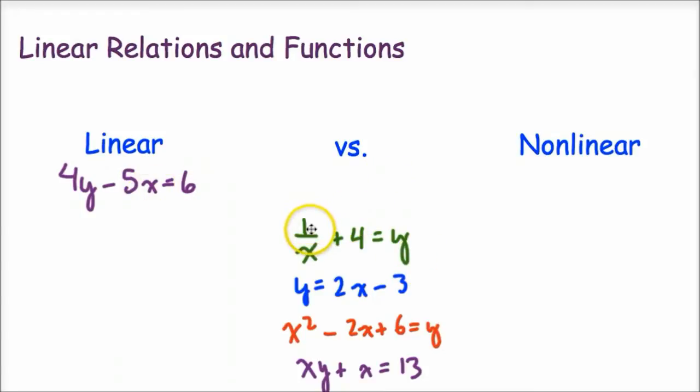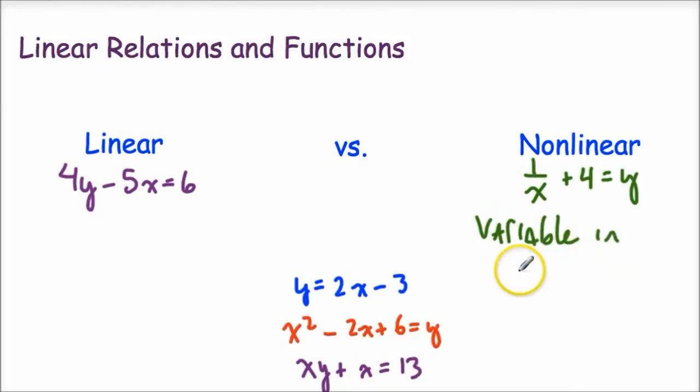Here we have 1 over x plus 4 equals y. That is going to be nonlinear, and the giveaway for that is because there's a variable in the denominator. So when we have that 1 over x, we know that that is going to be a nonlinear equation. That's another giveaway.